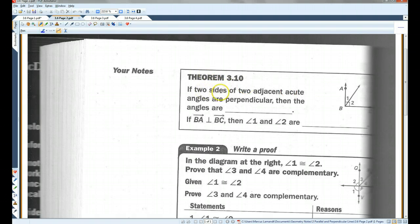Theorem 3.10. If two sides of two adjacent acute angles are perpendicular, then the angles are complementary. Remember, complementary means they add up to 90 degrees. Now, this makes sense because if these two lines are perpendicular, then they're going to form a right angle, a 90-degree angle.